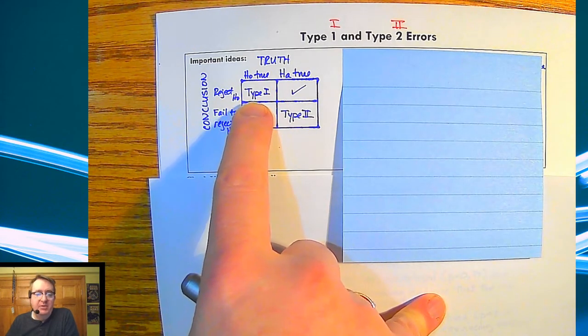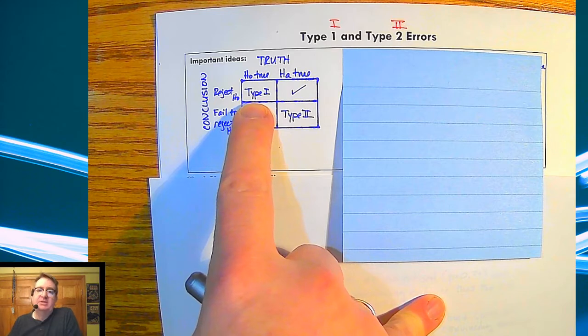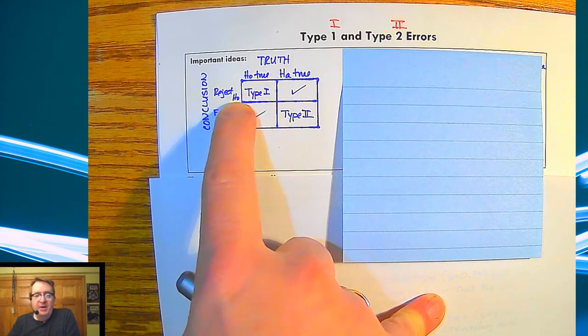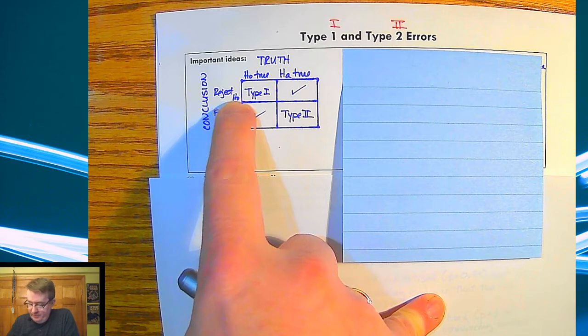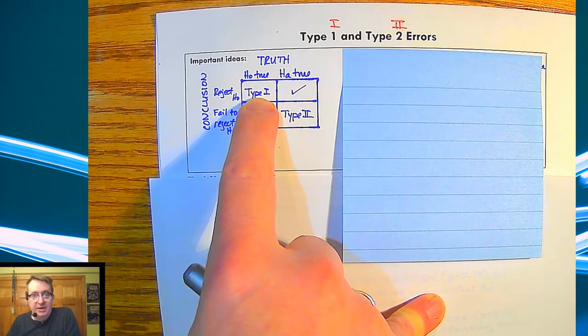This would be the same—the classic version of stats is this: somebody who's innocent of a crime, however, they get convicted of that crime. An innocent person goes to jail.